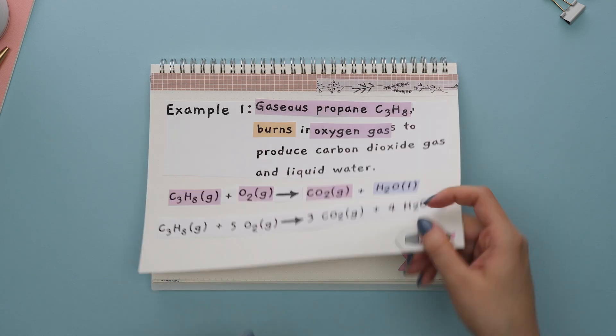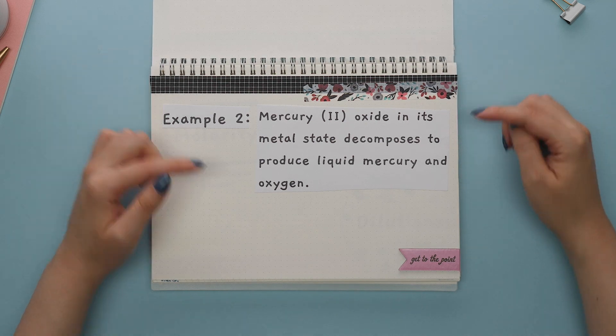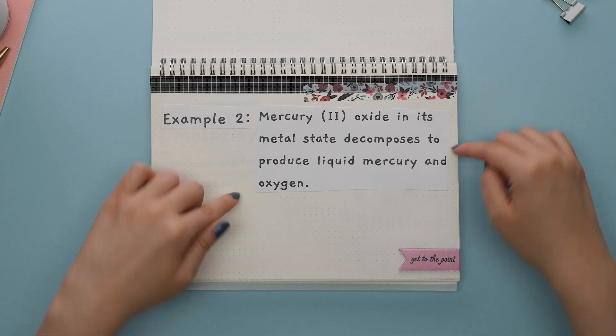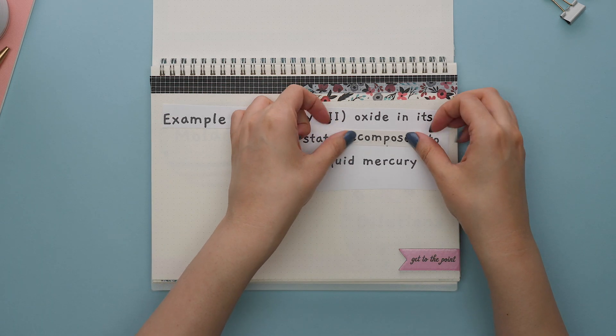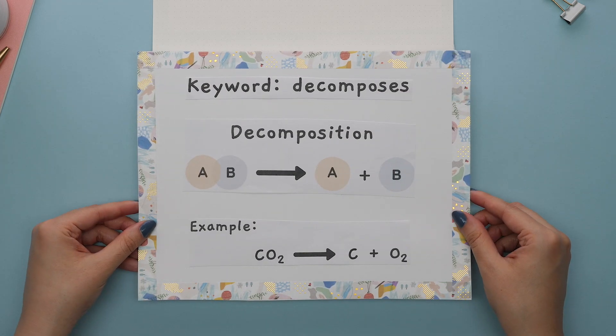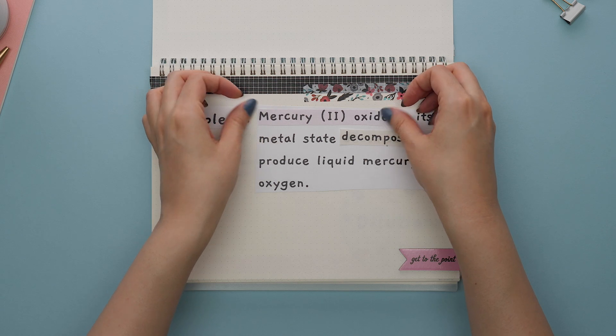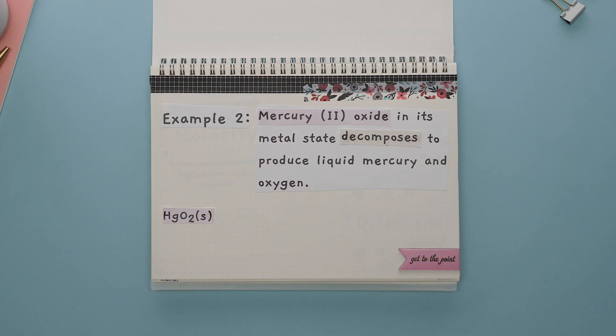Here's another example. It states, mercury oxide in its metal state decomposes to produce liquid mercury and oxygen. Start with identifying the keywords. The word decomposes tells us this is a decomposition reaction, which looks like this. So we know that the only reactant we will have is mercury oxide in its solid state, which looks like this.